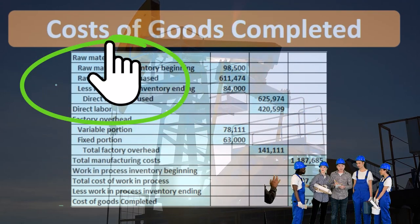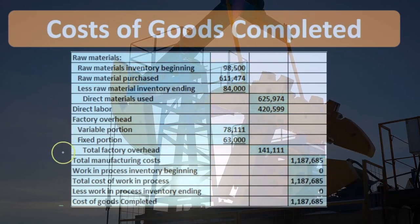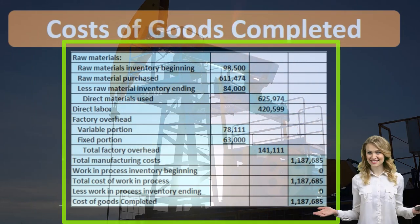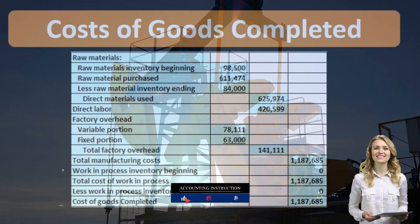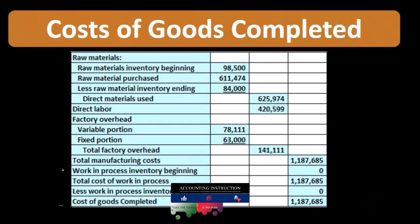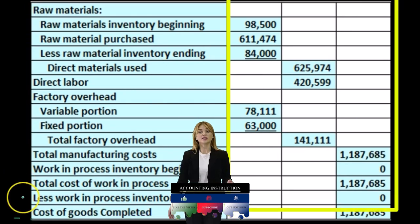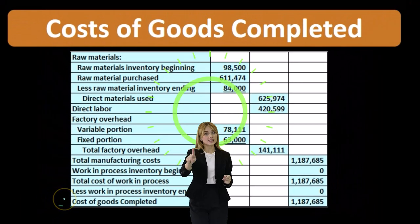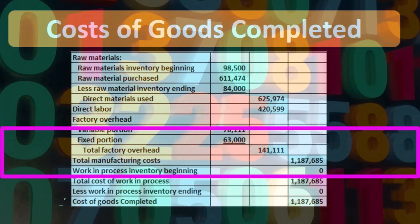We calculate the costs for the period — the month or year — of raw materials, labor, and factory overhead. That gives us the total manufacturing costs for that time period. If we had beginning inventory in work in process at the start, we would add that to the current period costs, giving us the total cost in work in process. Then, if there is inventory left over at the end, we subtract that out to arrive at the cost of goods completed — a number used in the cost of goods sold calculation.